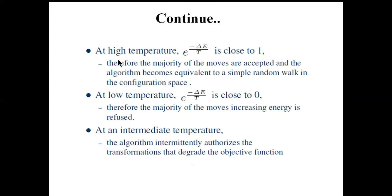At high temperature (initial stage) the algorithm performs a global search — it explores the search space broadly. After identifying probable good areas, at lower temperature it switches to local search to find the best solution. This is the fundamental concept of optimization: initially explore globally, then exploit locally.